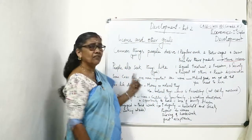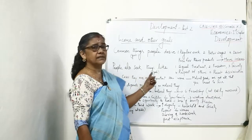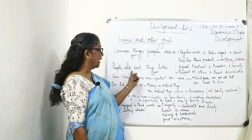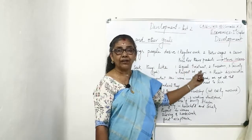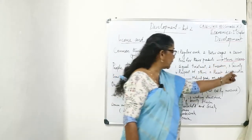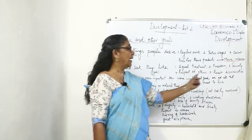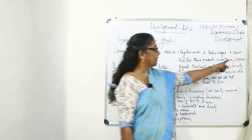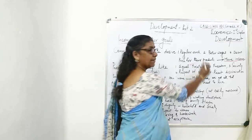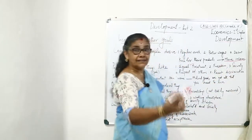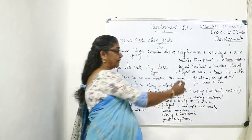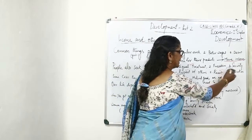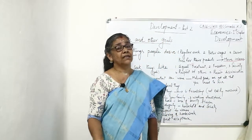Other than income, people also desire: equal treatment, freedom, security, respect of others, and they resent discrimination. These are the other goals people prefer or desire for.